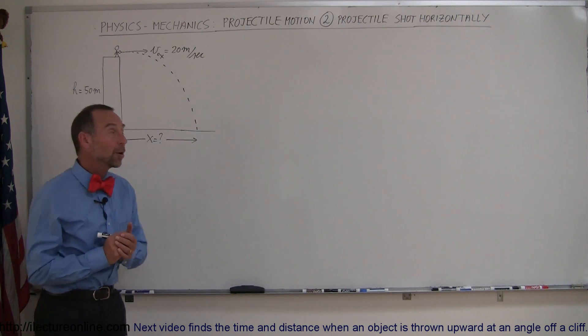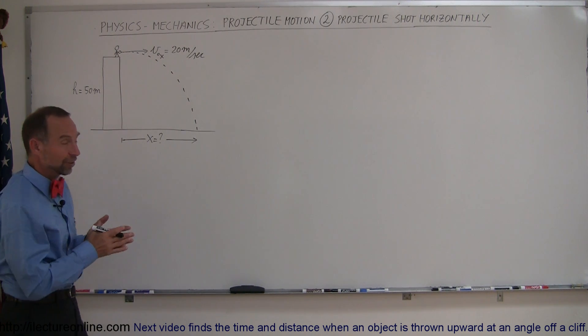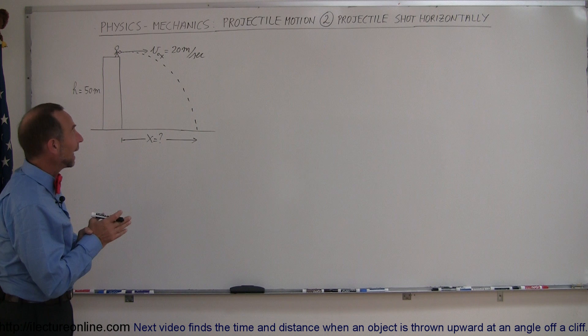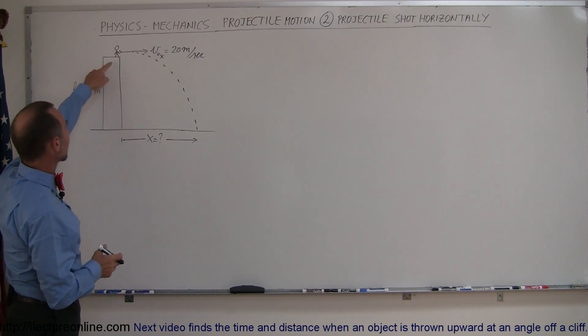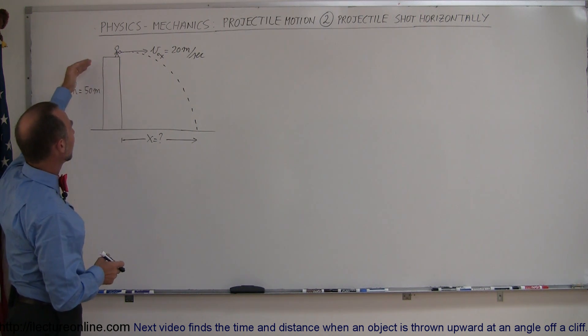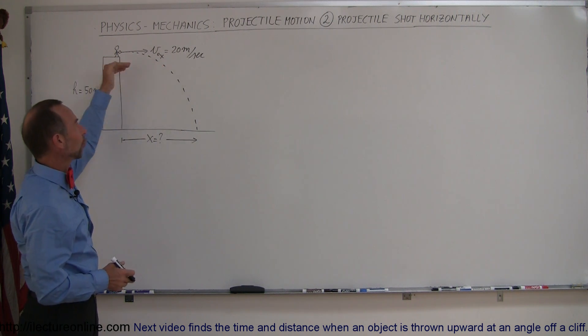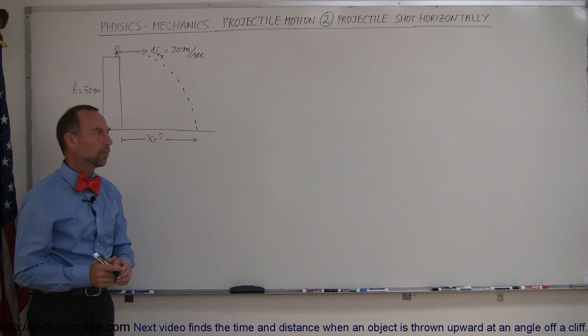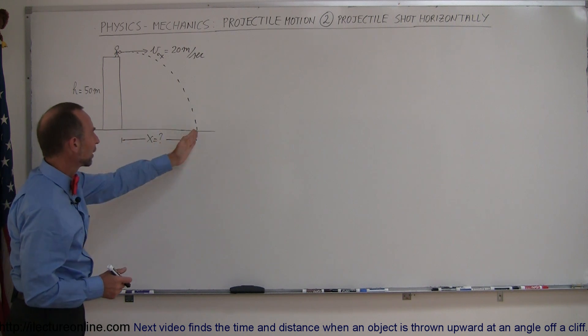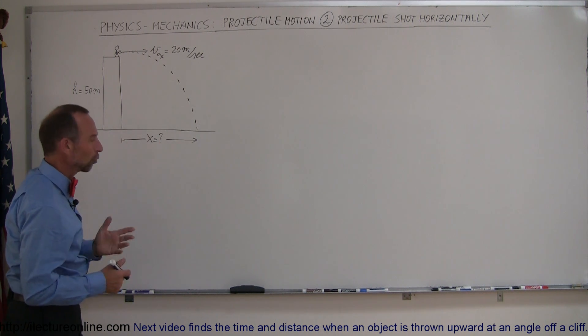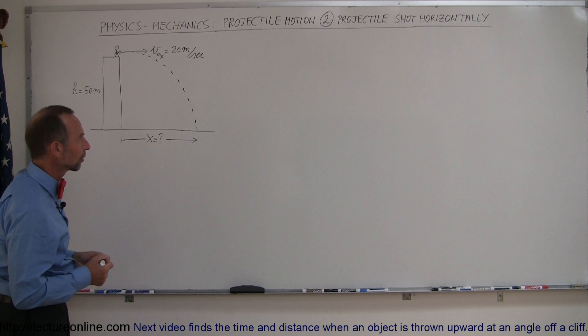Here's our first example of how we work with projectile motion. This is again motion in two dimensions. Our first example has somebody on top of a building 50 meters high and throws out or shoots out a projectile at 20 meters per second horizontally out. How far will it go before it hits the ground? What's the range, or what is x equal to when it hits the ground?